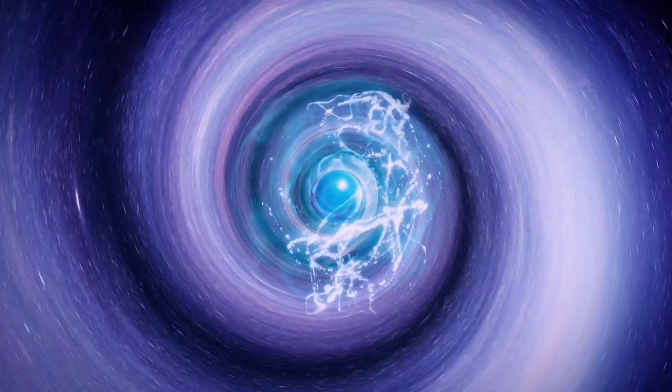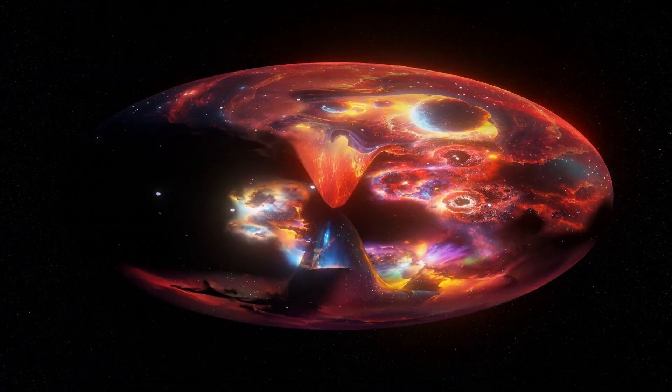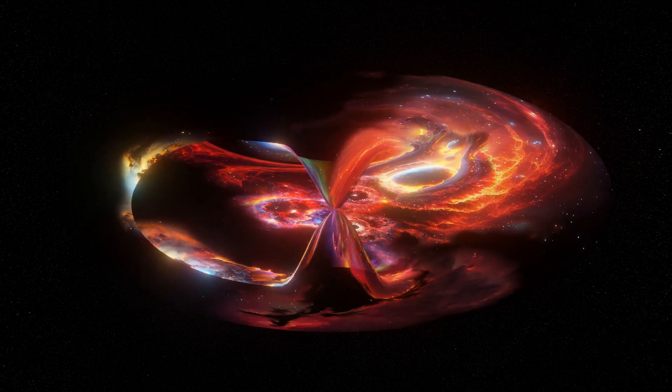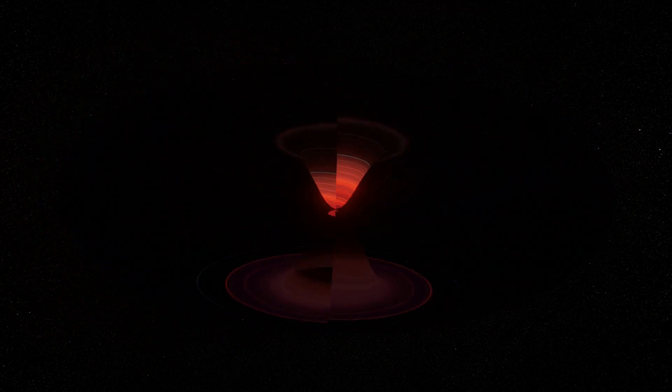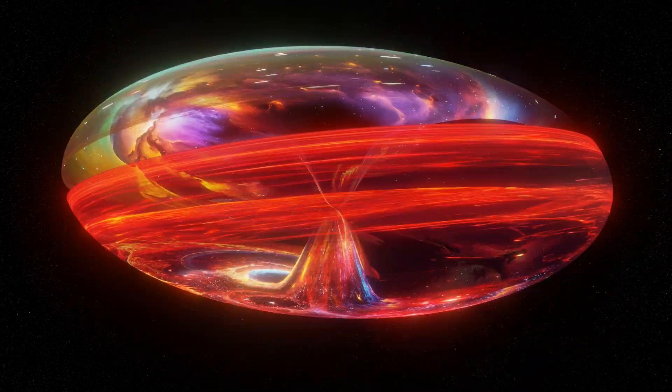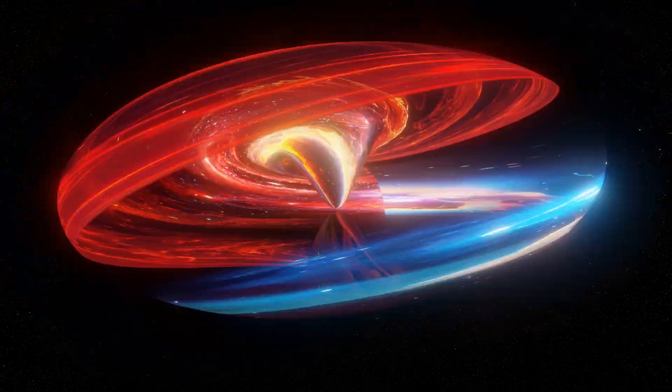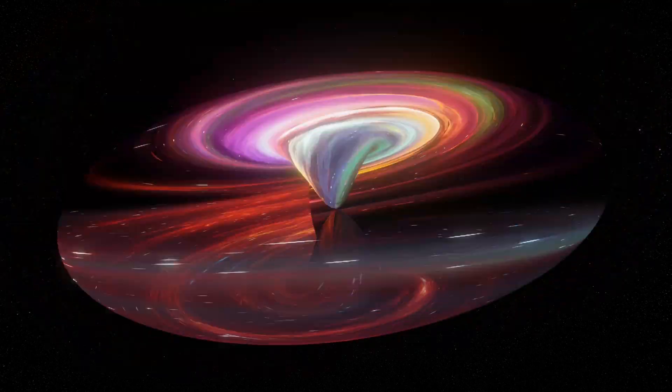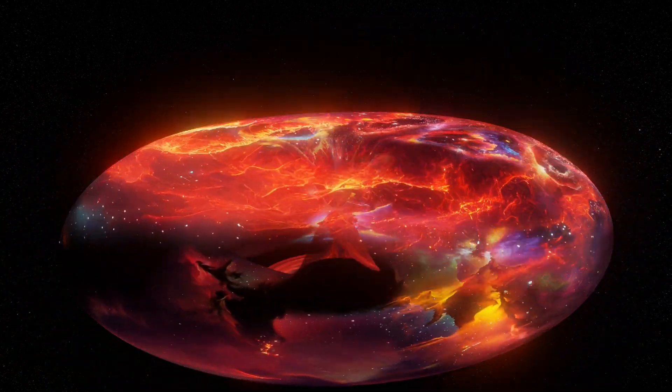The matter and energy expelled by white holes is thought to come from... well, we're not entirely sure. Some theorists suggest that white holes could be the exit points for the matter and energy consumed by black holes. This is where the idea of a cosmic connection comes into play. Imagine a black hole and a white hole linked together, forming a cosmic bridge or wormhole.